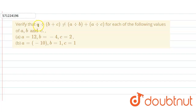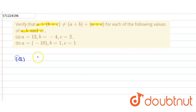In the given question we have to verify that a divided by (b plus c) is not equal to a divided by b plus a divided by c, where certain values of a, b, and c are given. In the first part, a is 12, b is minus 4, and c is equal to 2.